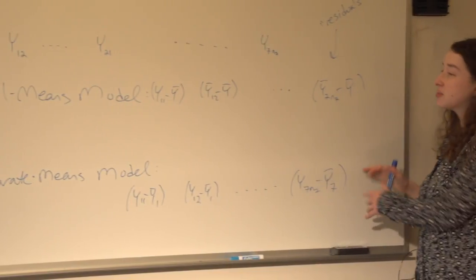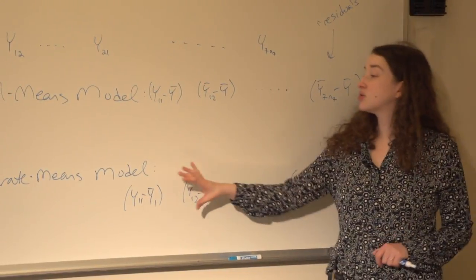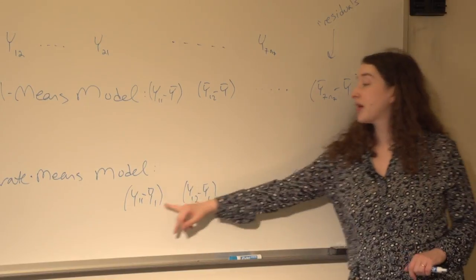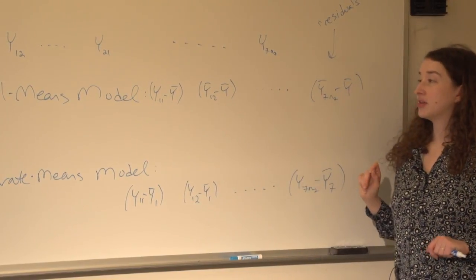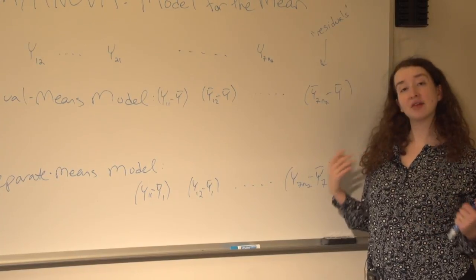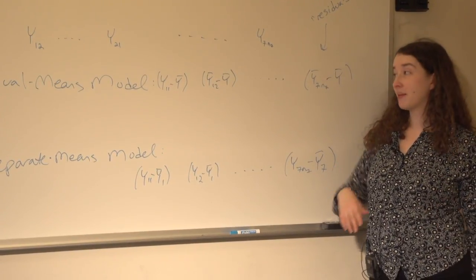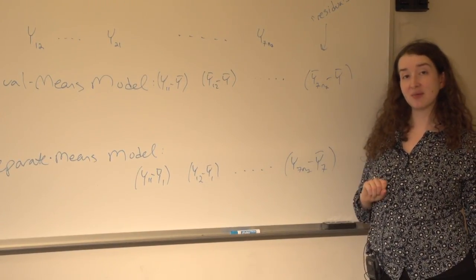This will always be a little bit smaller, but are the separate-means residuals enough smaller that it's worth having seven different means to estimate rather than just combining all the data? In other words, do we have enough evidence to reject the null hypothesis that the means are the same in every group?